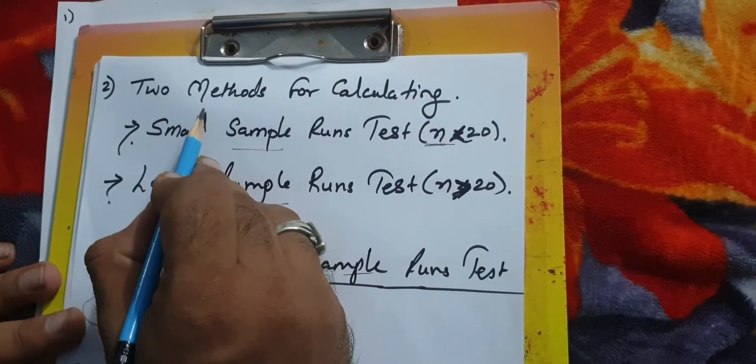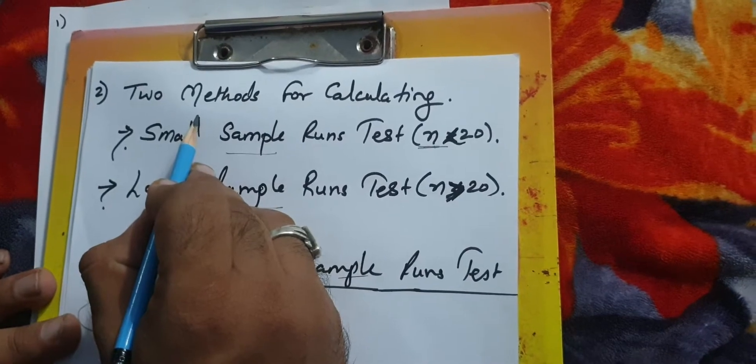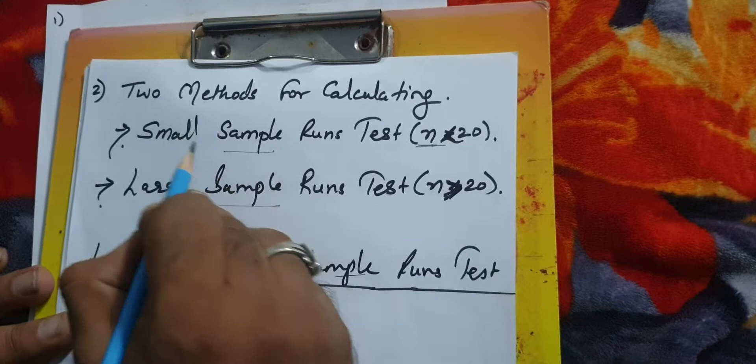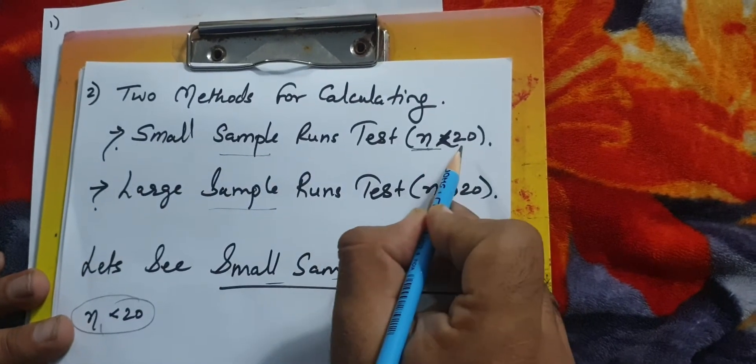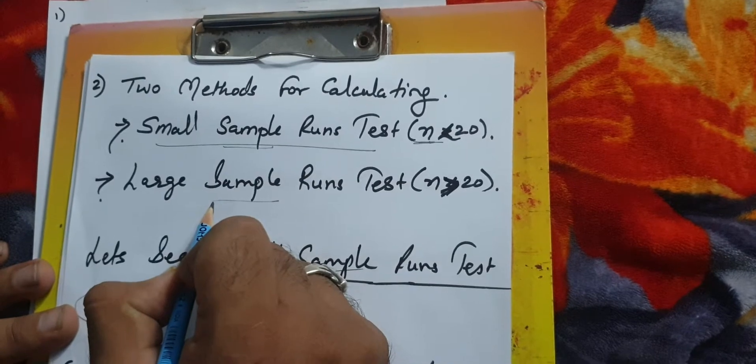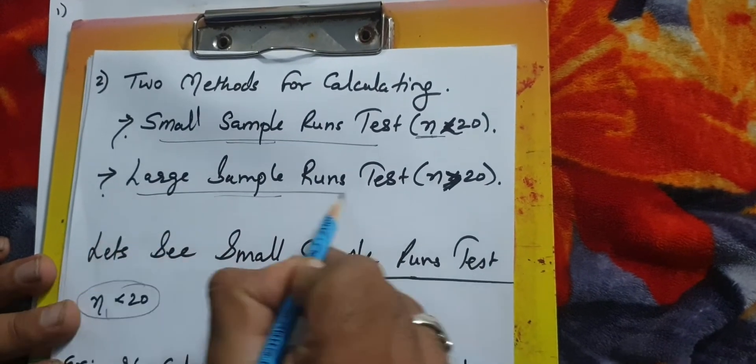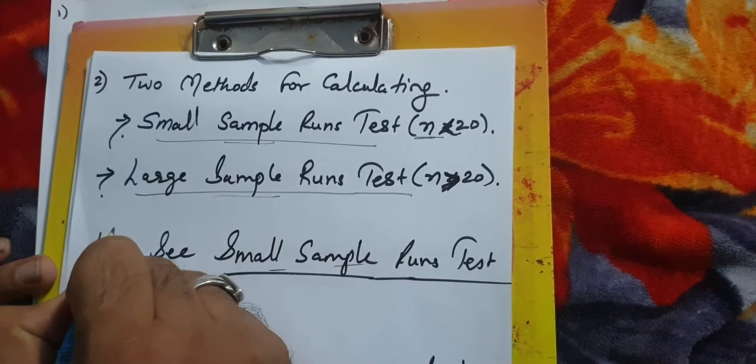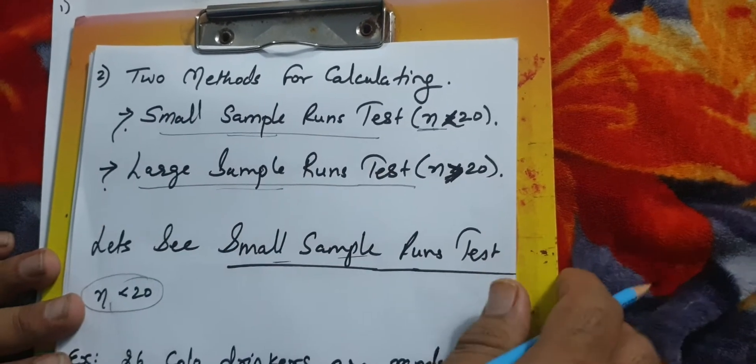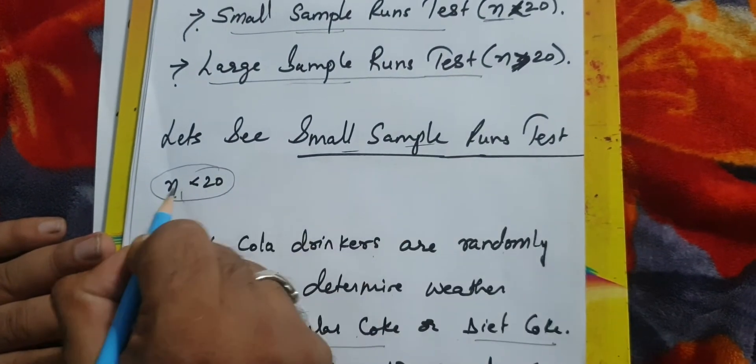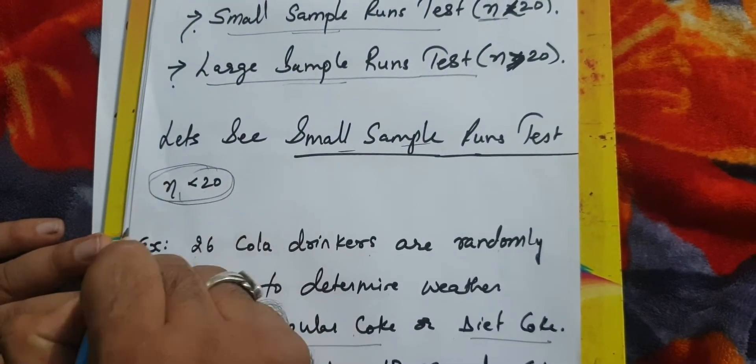Basically there are two methods considering the runs test. We need to see the size of sample. If the sample is less than 20, we apply small sample runs test. If the sample size is greater than 20, we apply large sample runs test. First we will see small sample runs test where n is less than 20.